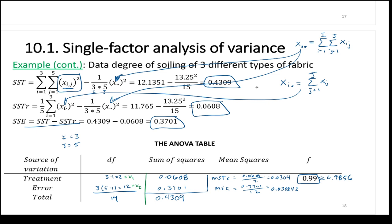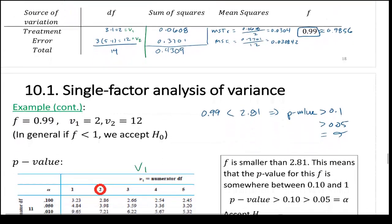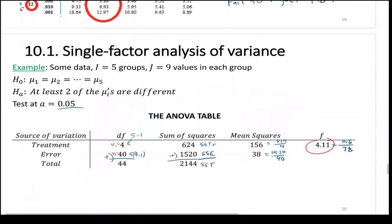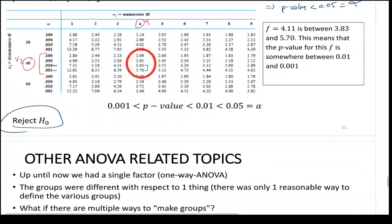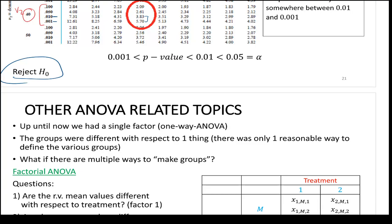This will be one problem out of seven or eight on the final exam. The big takeaway for ANOVA is filling out the ANOVA table: get SSTR, SST, then SSE by subtraction; take the fractions to get MSTR and MSE; take the ratio to get F; then look up the p-value in the F distribution table.